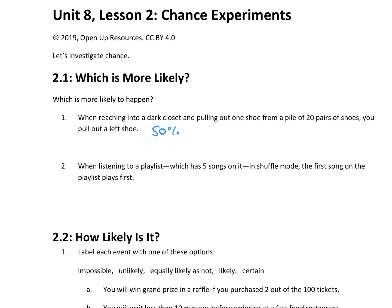For the second scenario, you have 5 songs in it. Only one of those songs is at the top of the playlist, so you have a 1 out of 5 chance of choosing the first song, or the shuffle mode choosing the first song. So that's 1 fifth, which is 20%. So we have a 20% chance. So we know that pulling out a left shoe is more likely to happen.